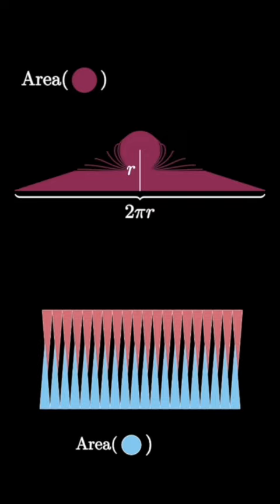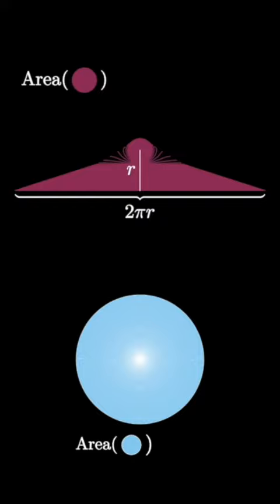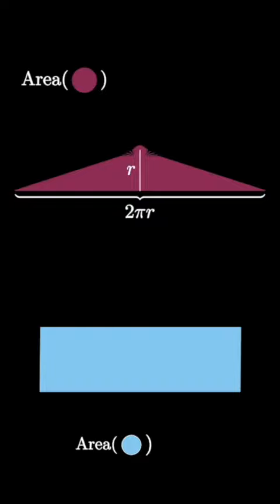It turns out that in the top shape, we end up with a triangle that has a height of r and a base of length 2πr. And in the bottom shape, we end up with a rectangle where the length is given by half the circumference, which is π times r, and a height given by the radius of r.